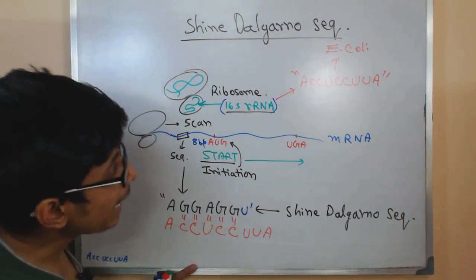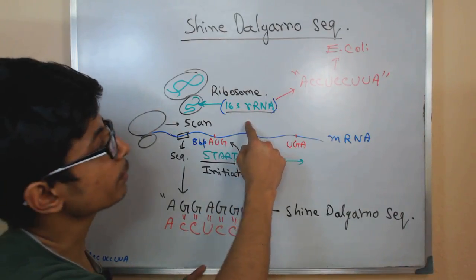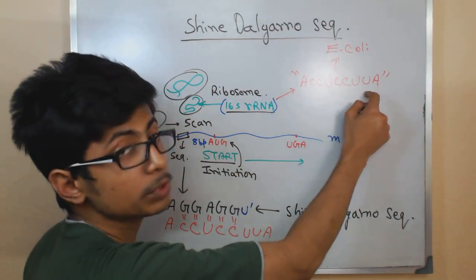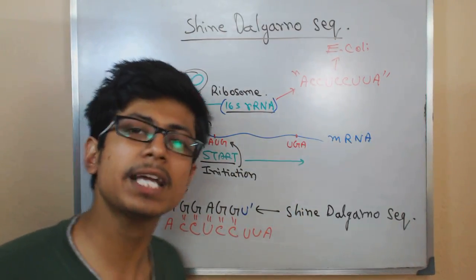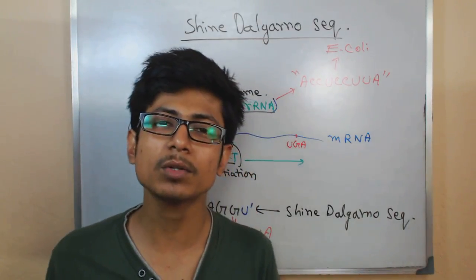Where the sequence for Shine-Dalgarno is AGGAGGU and the 16S rRNA sequence is ACCUCCUUA. So that's it guys, that's all about Shine-Dalgarno sequence.